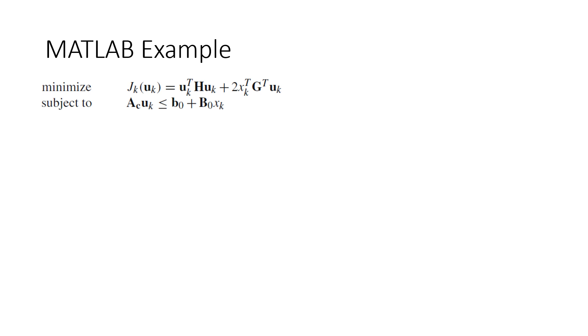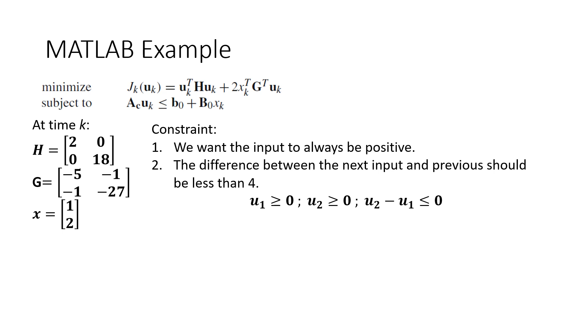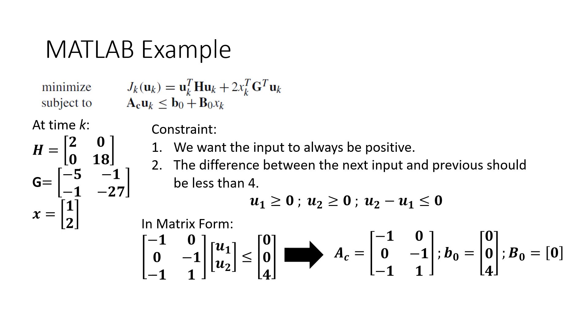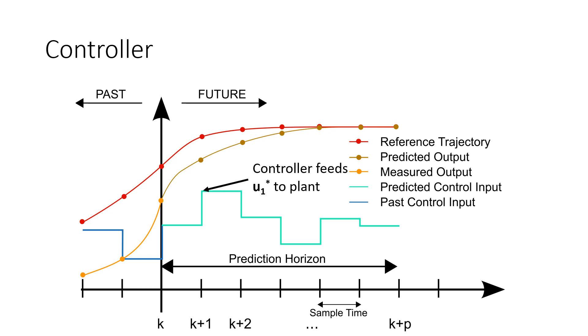Let's go over a quick example in MATLAB of how to solve this optimization problem for a single input system over one iteration with a prediction horizon of two time steps. Let's suppose at time k our observer has told us our state variables are 1 and 2, and that we have been able to calculate our h and g matrices. Let's also place the constraint that our future inputs must be positive, and that the difference from one input to the next cannot exceed 4. We can write this constraint in the following matrix form and determine the A_C and B_O matrices. Now that our optimization problem is in the correct form, we can use the MATLAB function quadprog and find our vector of optimum future inputs. Our controller can then feed the first input to our system. The arrow shows the first optimum input the controller will feed to the plant. This process will then be repeated for the next time step.